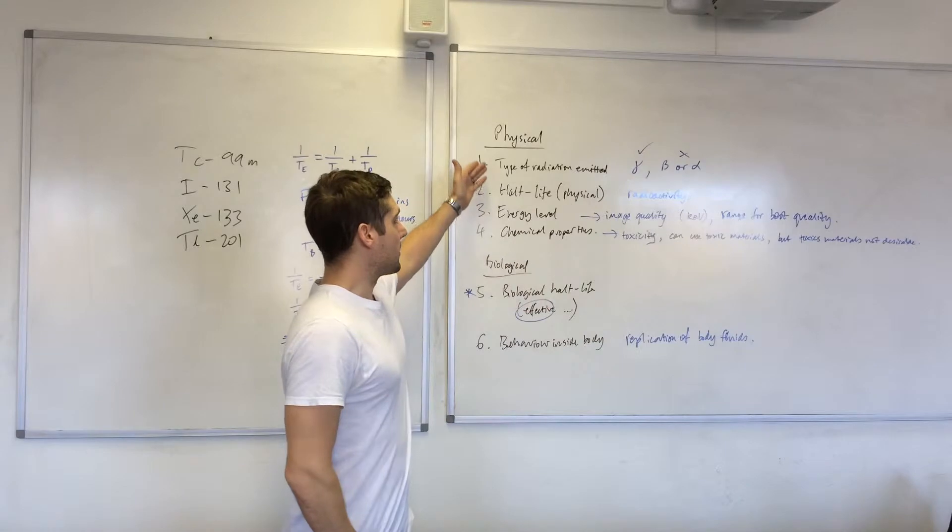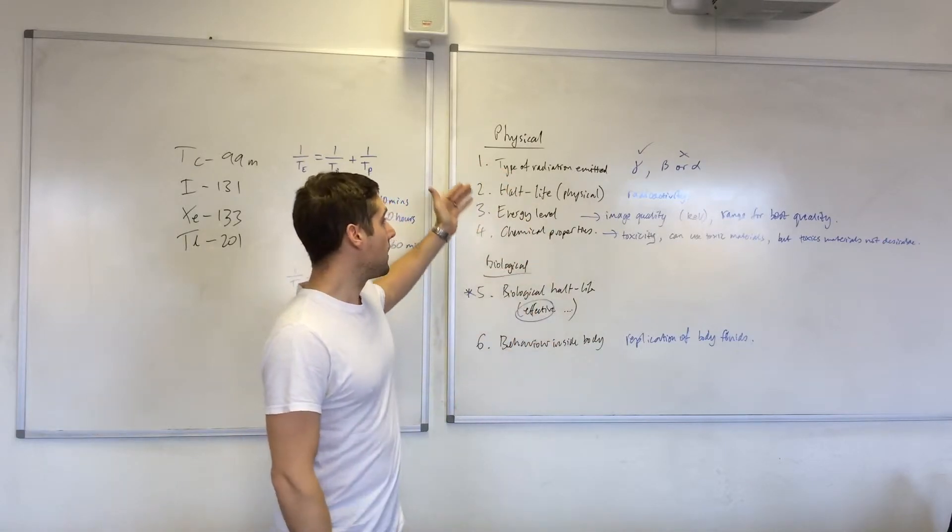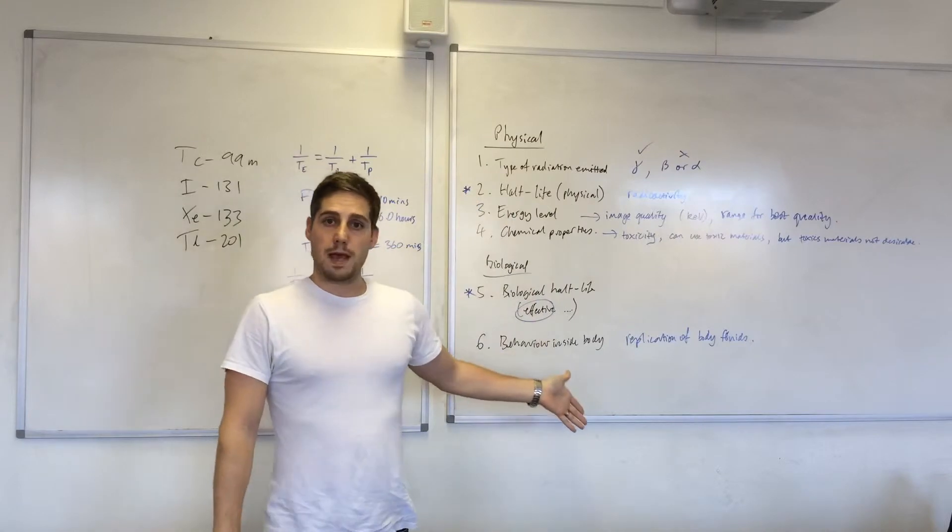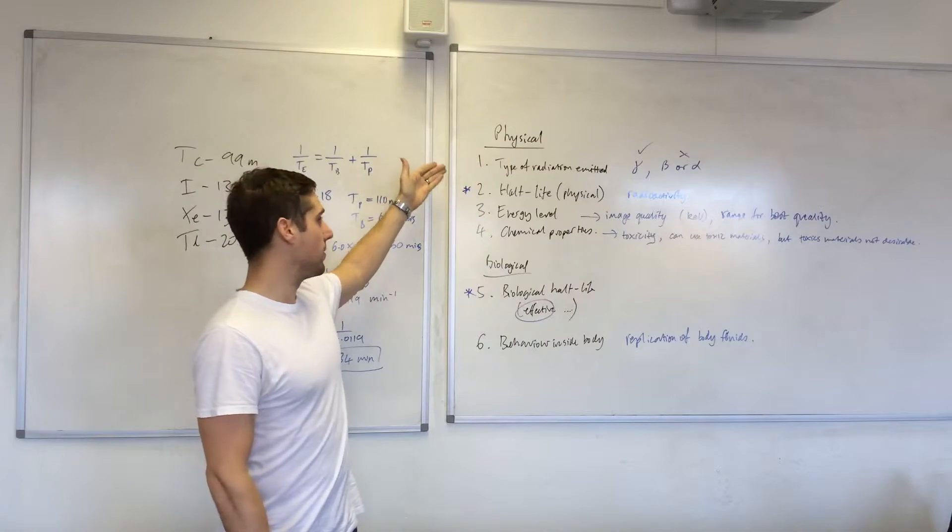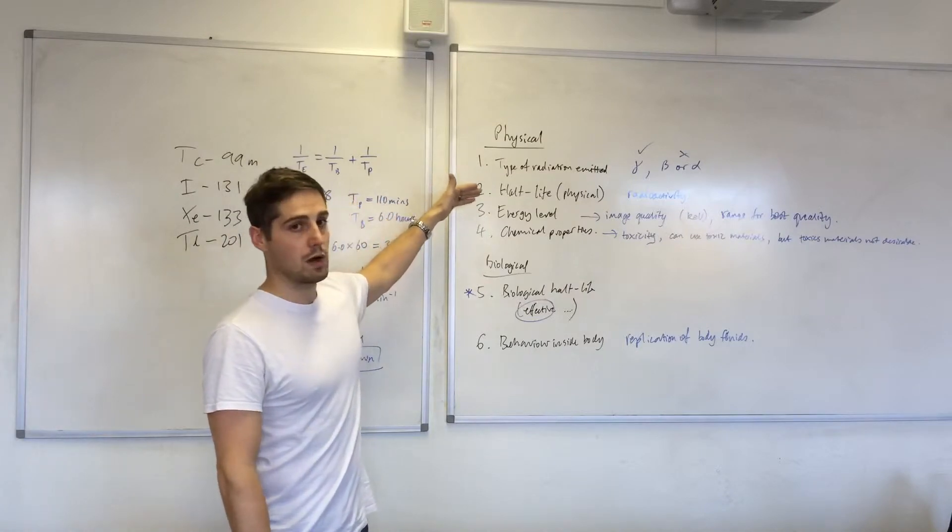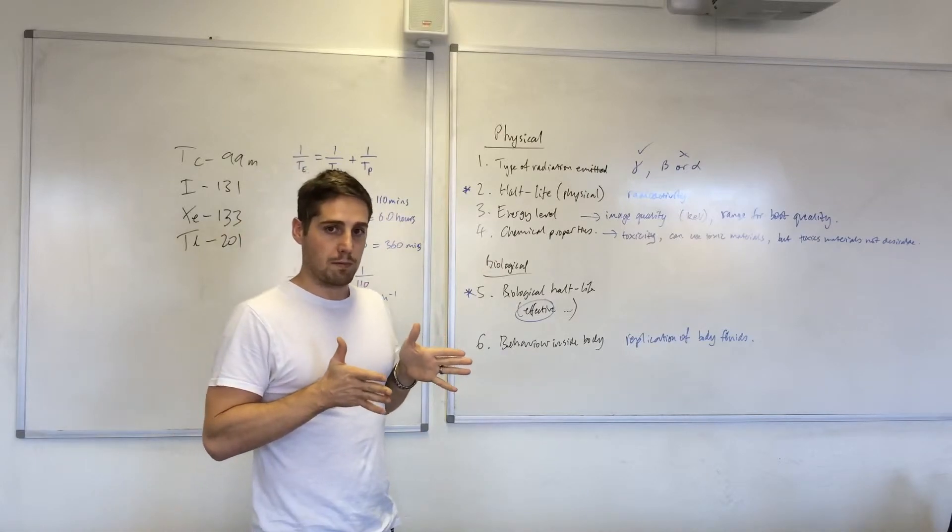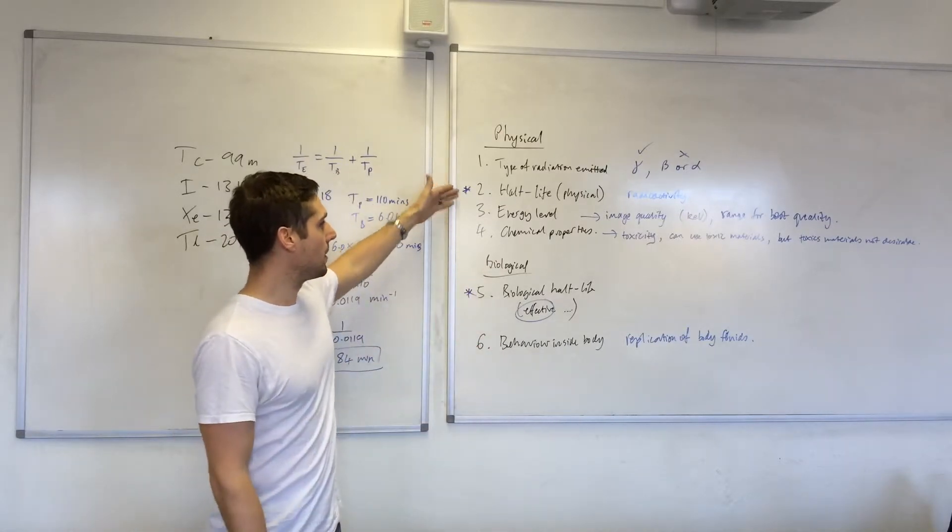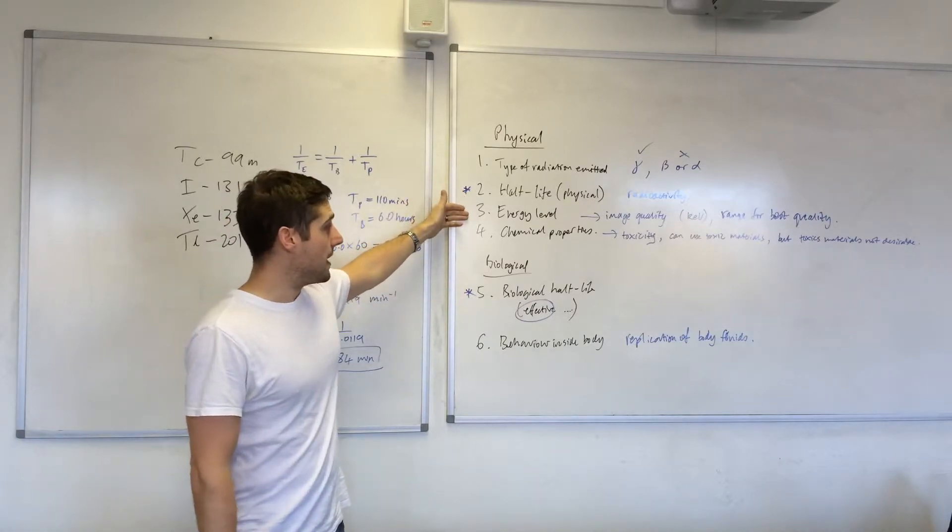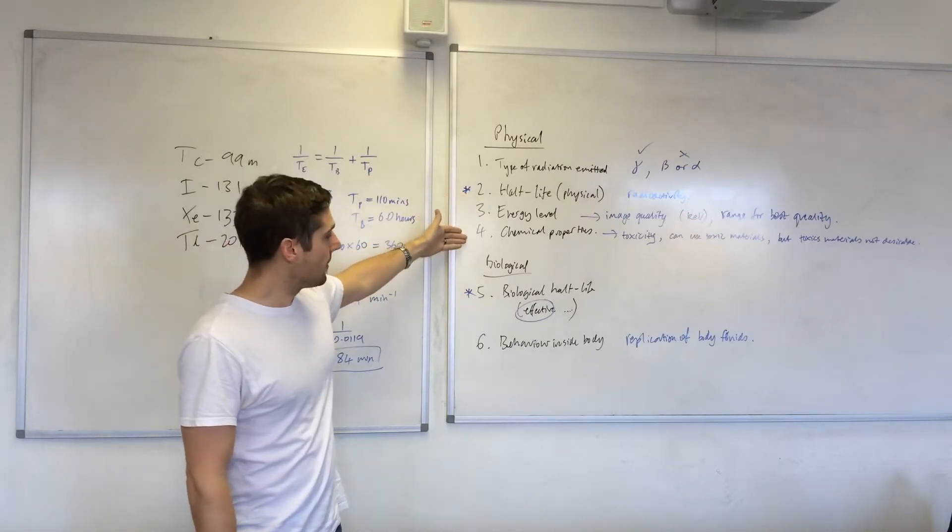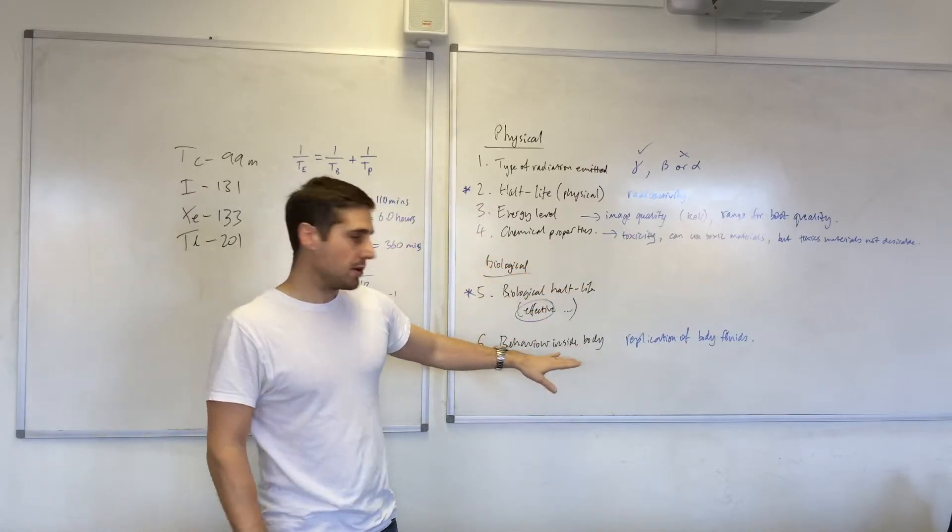You should be referring to the properties that we identified, defined and compared for M2. So the type of radiation emitted by each radionuclide, the physical half-life and biological half-life. You really need to be comparing the effective half-life that you calculated as well. So that's the combination of those two. Energy level, the chemical properties or toxicity and the behaviour inside the body.